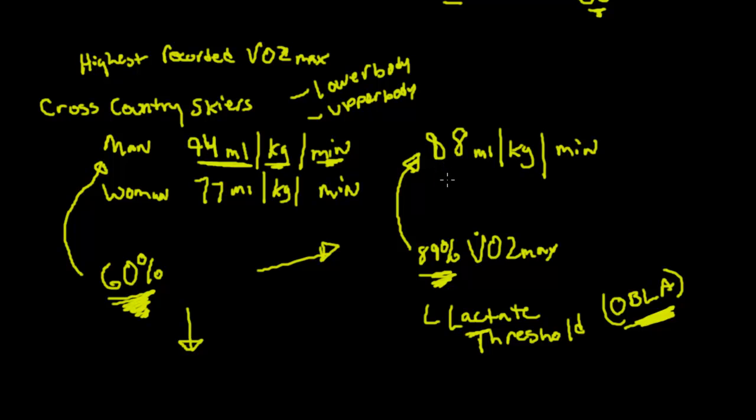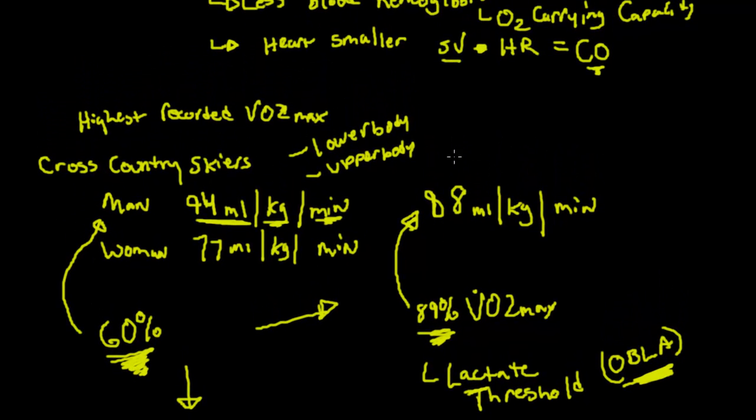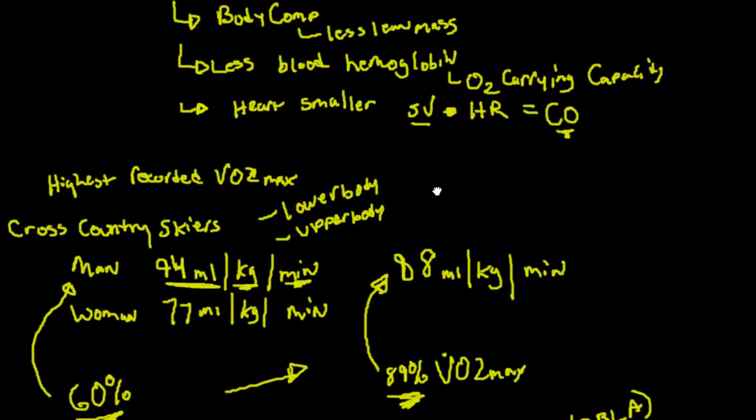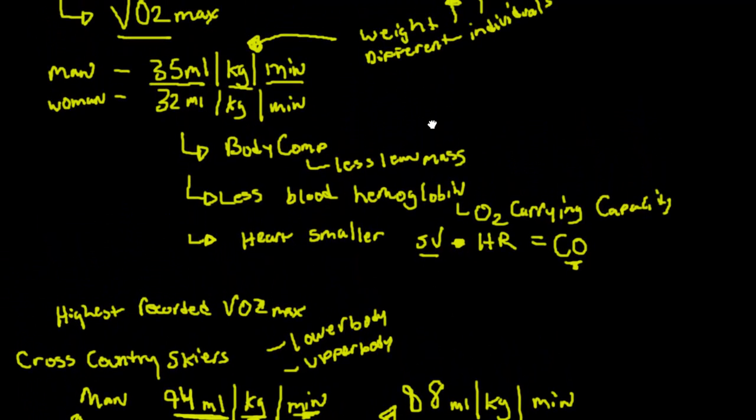That's exactly what happens in Lance Armstrong. He has an extremely high lactate threshold. He can train at much higher intensities than other individuals with possibly higher VO2 maxes than he has. He can outdo them because his lactate threshold is much higher.